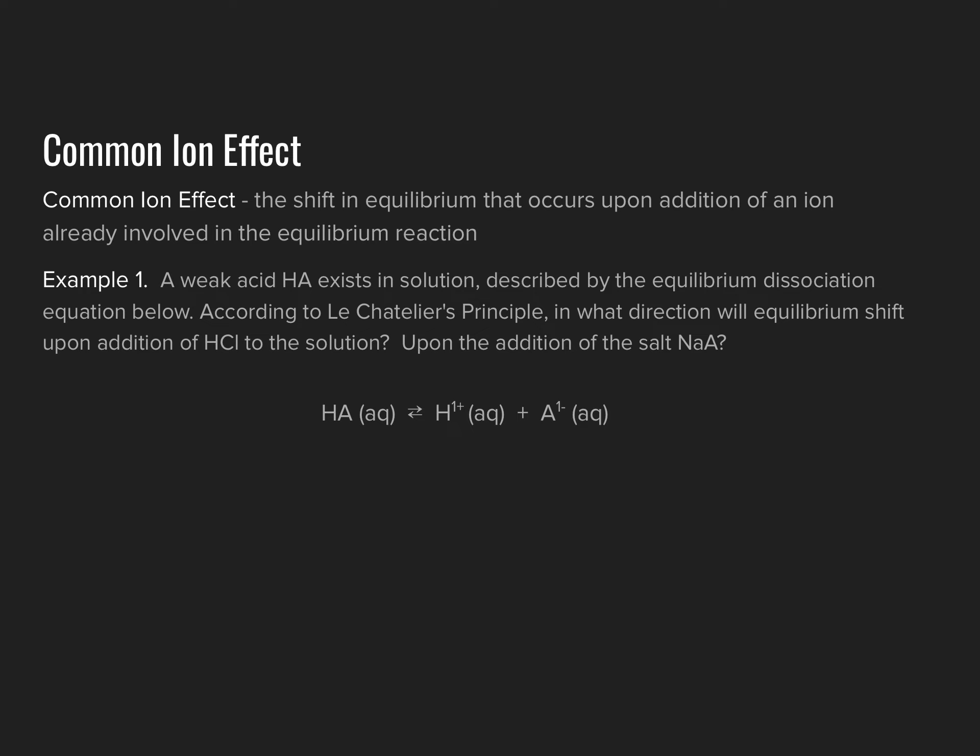In example number one, suppose we have a weak acid with generic formula HA in solution. The dissociation of that acid is described by the equation: HA (aq) → H⁺ + A⁻, where A⁻ is the conjugate base. The question is: according to Le Chatelier's principle, in what direction will equilibrium shift if we add hydrochloric acid to the solution, or if we add the salt NaA, where A represents the A⁻ anion?